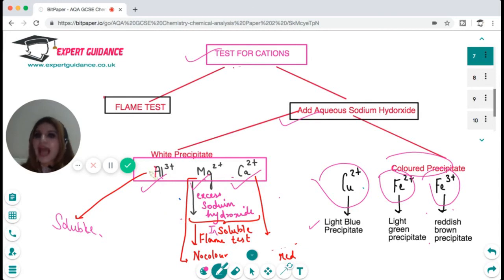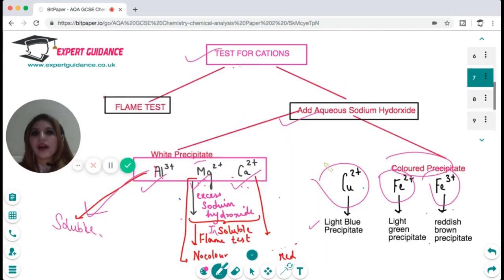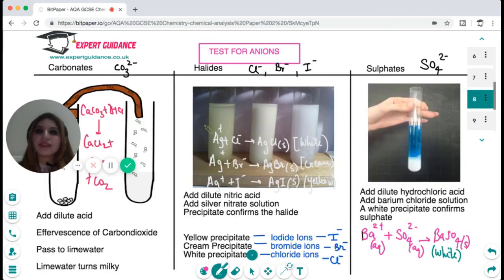How do we distinguish between all these three white precipitates? We add excess sodium hydroxide and the aluminium precipitate will dissolve, while magnesium and calcium will not dissolve. Then we can do a flame test. Magnesium will not produce any color, but if you remember, calcium has the red color.